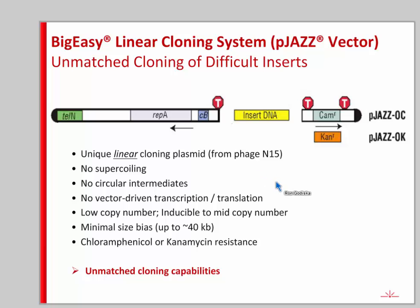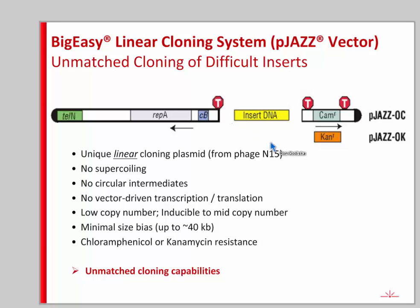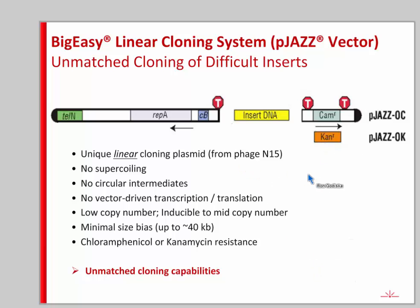There is very little size bias with this vector, partly because it maintains fragments of any size, and also because ligation of one side of the insert is independent from the other side. Whether you're cloning a 1 KB or 40 KB insert, you have two independent ligation reactions. So size really does not matter as far as getting an insert into the DNA. We have two different versions of the vector — either chloramphenicol or kanamycin resistance — and this type of vector also works very well for Gibson-type cloning.